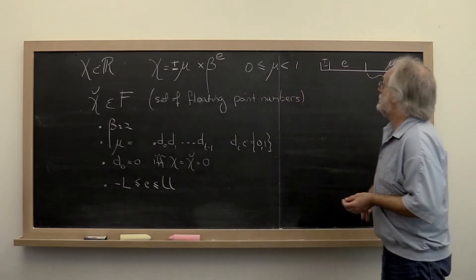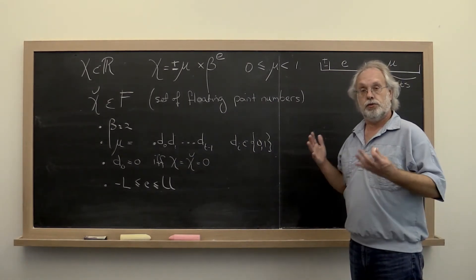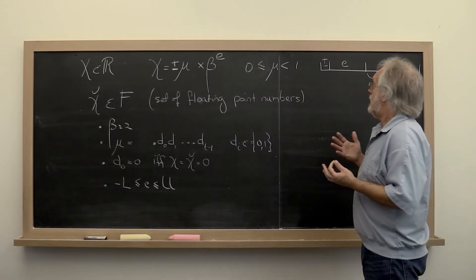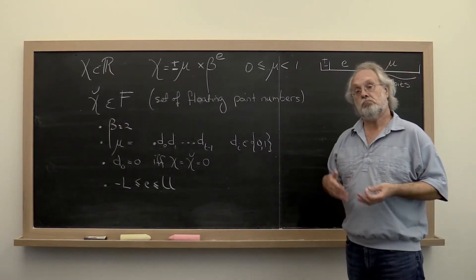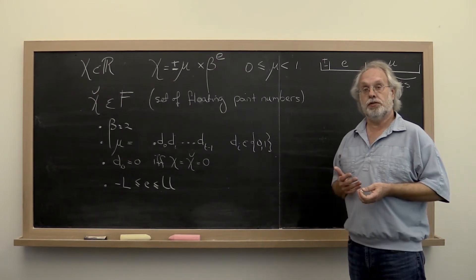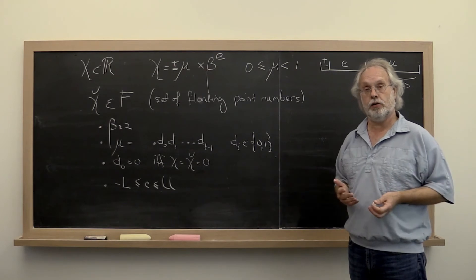So the problem is that we can only use a finite number of bits to store our real number. Typically people use 32 bits if it's single precision, 64 bits if it's double precision. And then you need to decide how do we use these bits that are at our disposal.